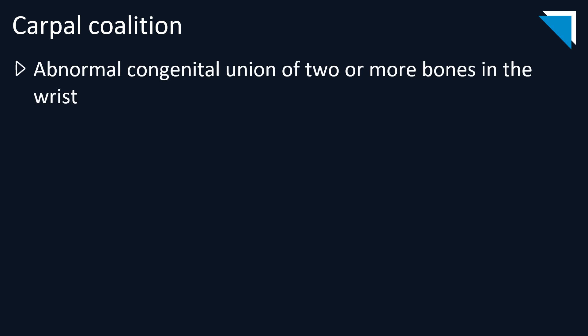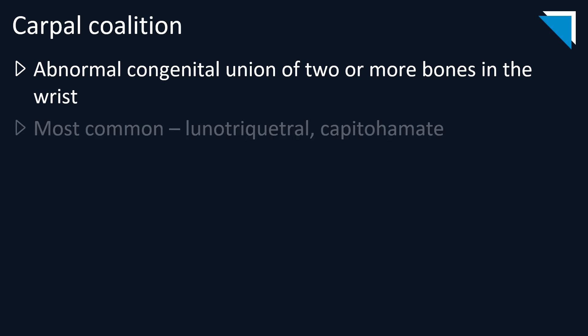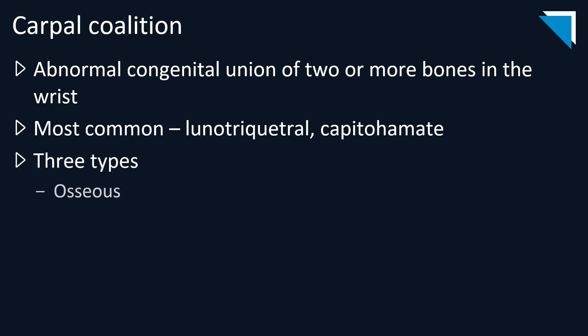Carpal coalition is an abnormal congenital union of two or more bones in the wrist and can occur between any two bones. The two most frequent subtypes are lunotriquetral and capito-hamate. As with tarsal coalition, there are three types — osseous, cartilaginous, and fibrous — and MRI is the modality of choice for differentiating between the three.